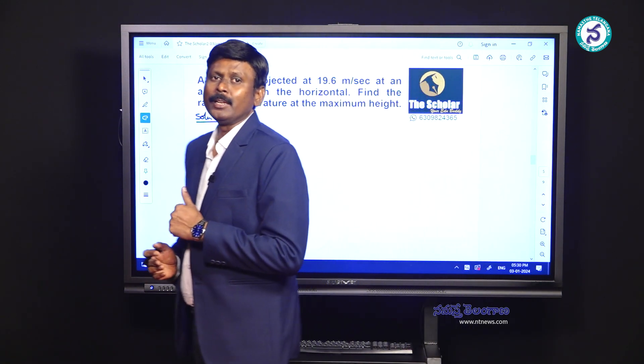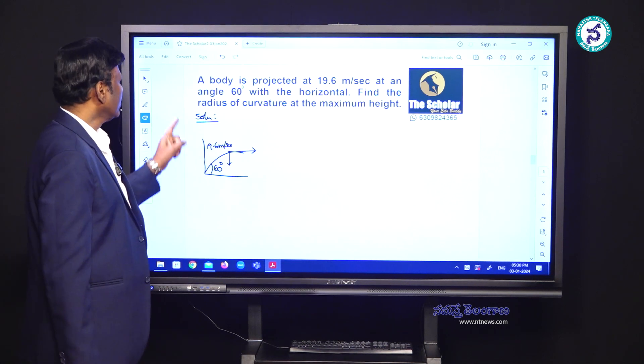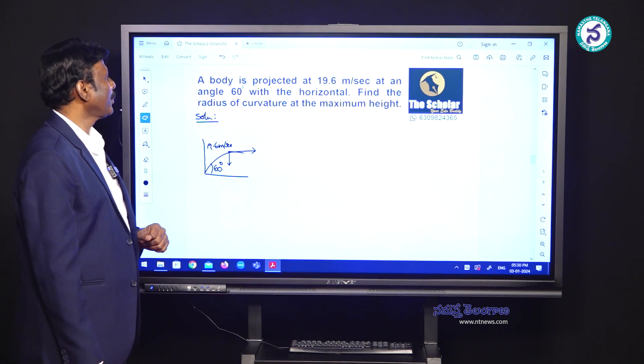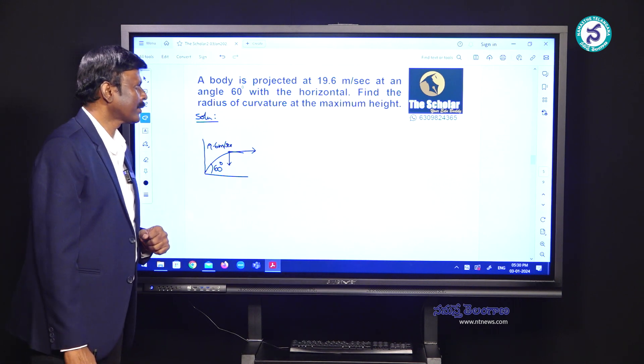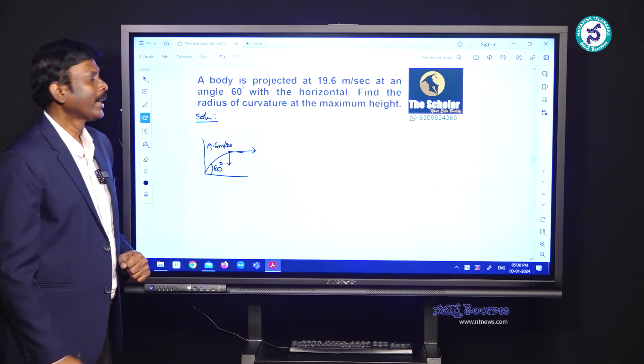Before that, let me read the numerical for you. A body is projected at 19.6 meter per second at an angle 60 degrees with the horizontal. Find the radius of curvature at the maximum height.